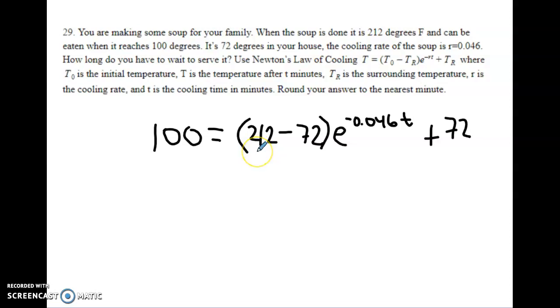Then, we're just going to solve for this. So, the first thing we would look at is, I would probably just combine the numbers in the parentheses. And I would also minus the 72. So, let's do that. If we minus the 72 from 100, we get 28 equals 140e to the negative 0.046T. Now, I'm going to divide both sides by 140 to get the e alone. And, 28 divided by 140 is 0.2.